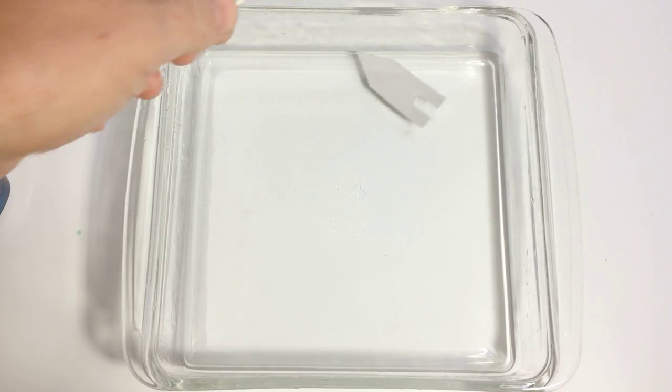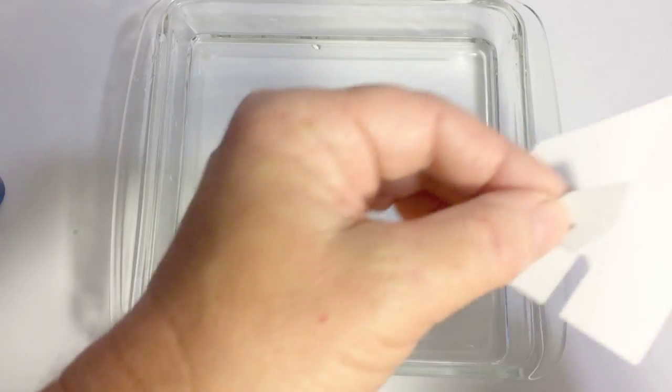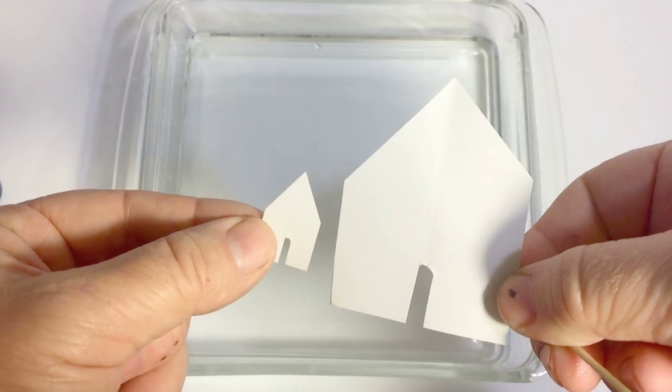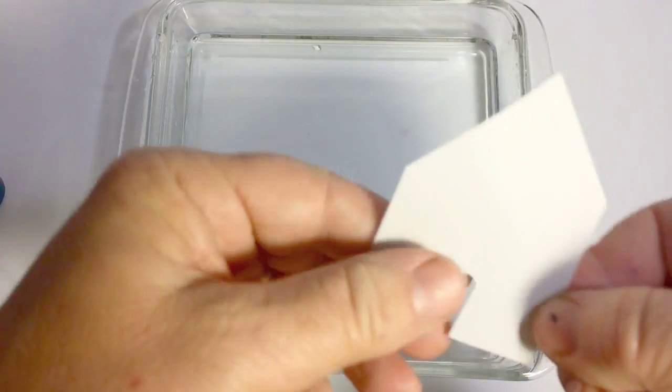This creates a strong but flexible skin on the water surface, which is able to support small insects or materials such as our small paper boat.